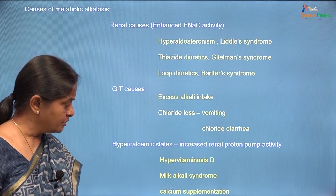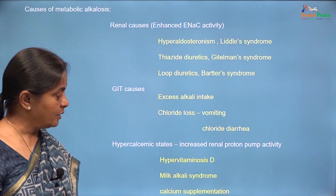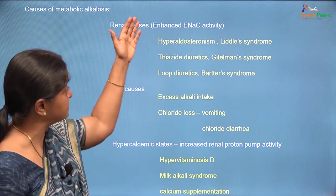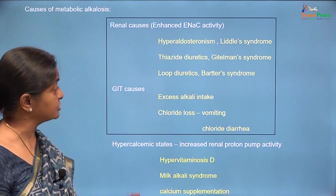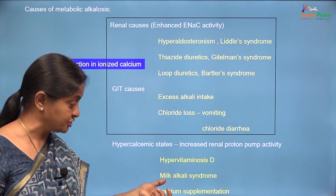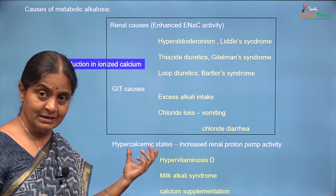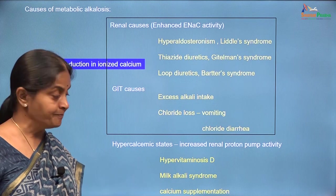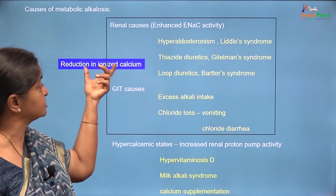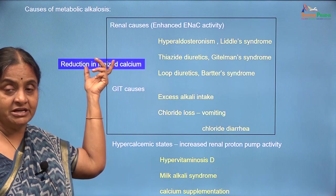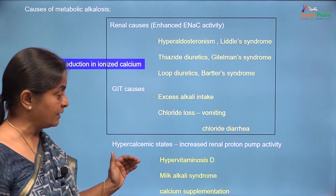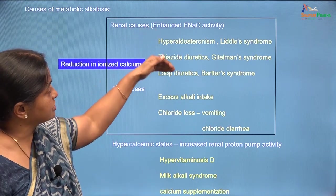Now let us move on to some hypercalcemic states which can actually increase renal proton pump activity. In all the other conditions there will be a reduction in free calcium or ionized calcium, but this is the only set of conditions where both total calcium and ionized calcium can be higher yet there is metabolic alkalosis as well. These conditions represent a combination of metabolic alkalosis and hypercalcemia, which is why I have listed them separately and not along with the renal causes.